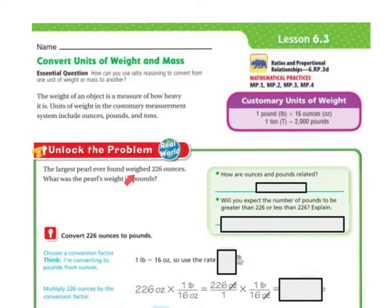The largest pearl ever found weighed 226 ounces. What was the pearl's weight in pounds? So first we need to know how ounces and pounds are related. If we look up here, we know that one pound equals 16 ounces.